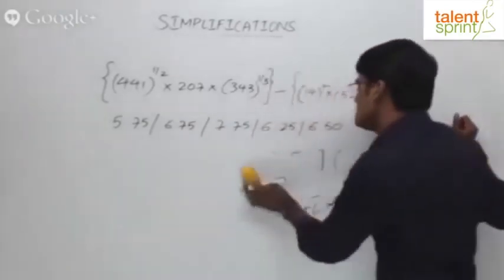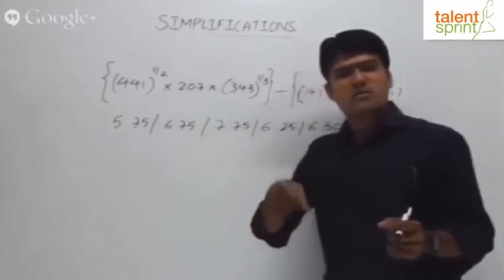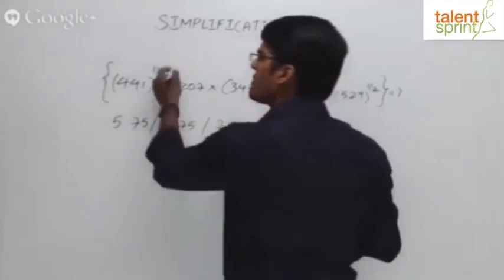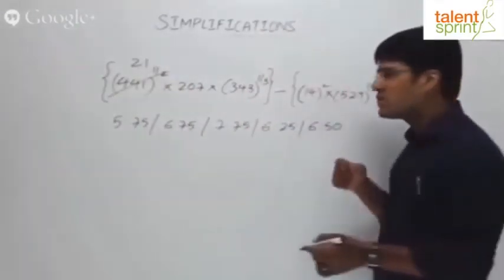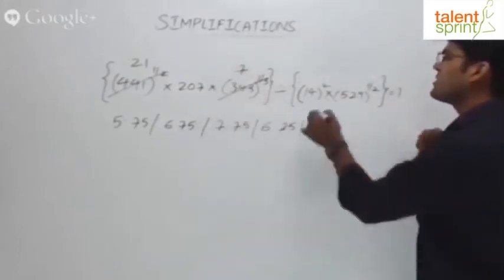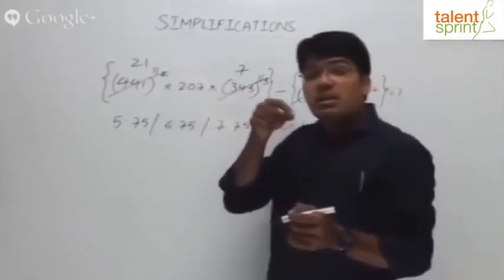You should have got the answer by now. Look at this: 441 power 1/2 means what? Square root. What is square root of 441? 21. Power 1/3 is cube root. What is cube root of 343? 7. 7 cube is 343. Likewise, 14 squared is 196.